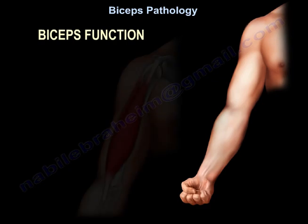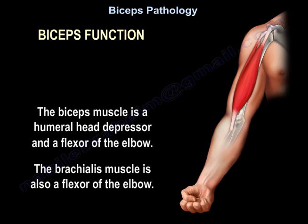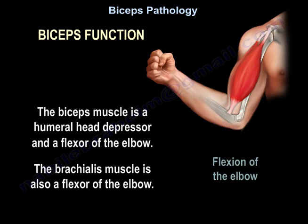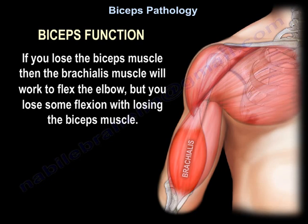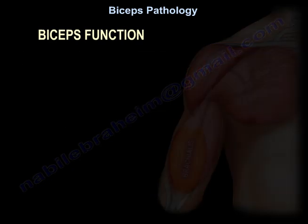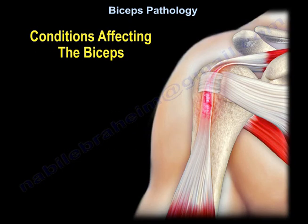What is the function of the biceps? It is a humeral head depressor and a flexor of the elbow. The brachialis is also a flexor of the elbow — if you lose the biceps, the brachialis still works, but you lose some flexion. The biceps is really a strong supinator of the forearm. If you lose the biceps, you lose about 40 to 50% of supination of the forearm.